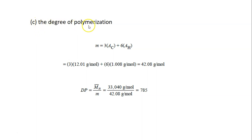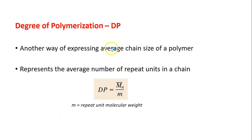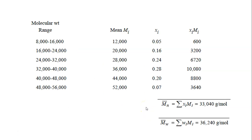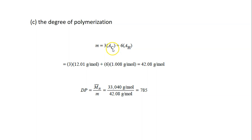The last part is to calculate the degree of polymerization. The formula is DP equals Mn divided by m, where m is the repeat unit molecular weight — that is, the molecular weight of the monomer. For polypropylene, the monomer consists of 3 carbons and 6 hydrogens, giving a molecular weight of 42.08 grams per mole. Therefore, DP equals 33,040 divided by 42.08, which gives 785.